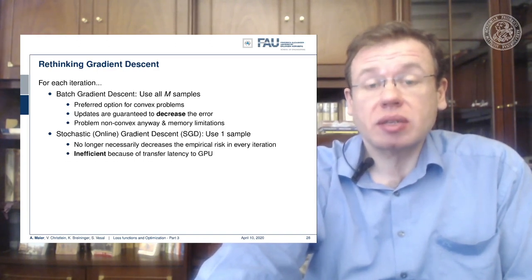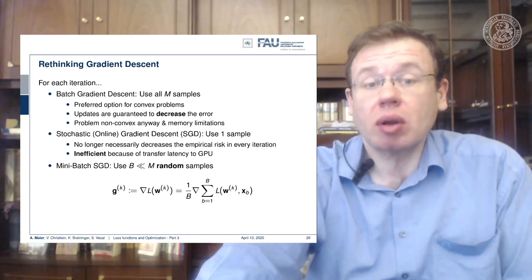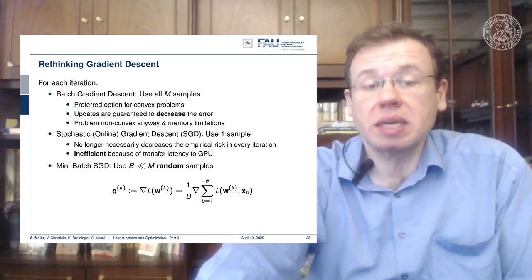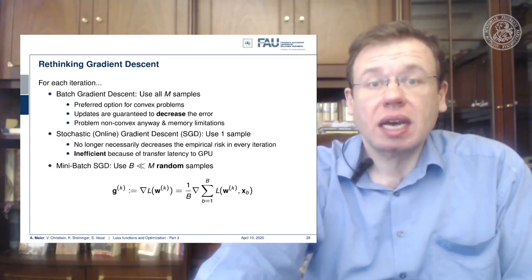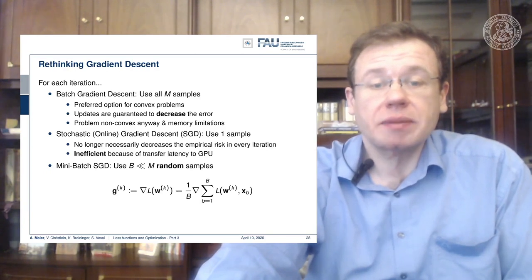A compromise between the two is mini-batch stochastic gradient descent. Here you use b — a number much smaller than the entire training dataset — of random samples chosen randomly from the entire training dataset, and then you evaluate the gradient on the subset b. This is called a mini-batch. It can be evaluated really quickly and you can do several mini-batches in parallel, then do the weighted sum and update.